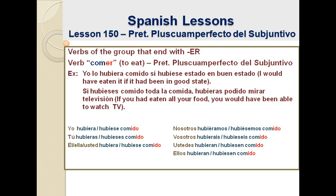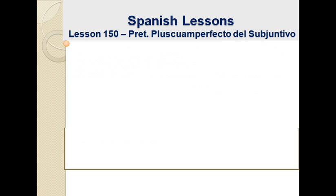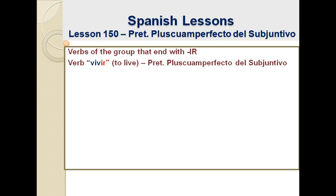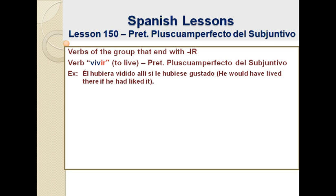Let's now jump into the third group of verbs — the verbs that end with -ir. This is the group of verbs that has more irregulars, but we will see a regular verb: the verb vivir, or 'to live.' Example: 'Él hubiera vivido allí si le hubiese gustado.' This means: he would have lived there if he had liked it.